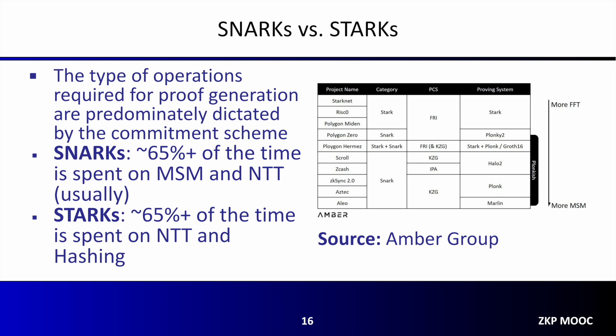As mentioned before, the computationally expensive operations involved in proof generation can vary from system to system. In general, these operations are dictated by the commitment scheme used when instantiating a proof system. Commitments such as KZG or Kate commitments lead to MSM operations during proof generation, while when FRI is used as a commitment scheme, the proof generation process is often dominated by NTT. As a rule of thumb, many SNARK systems such as Groth16 and Marlin are dominated by MSM, while STARKs are often dominated by NTT.